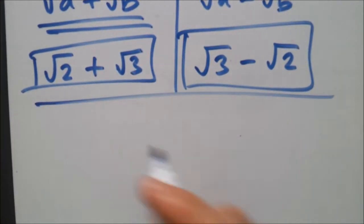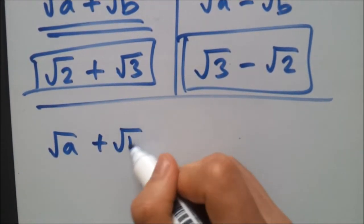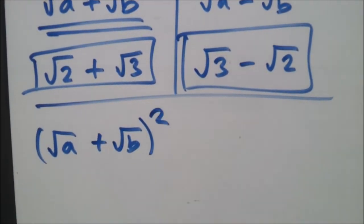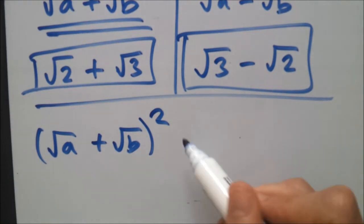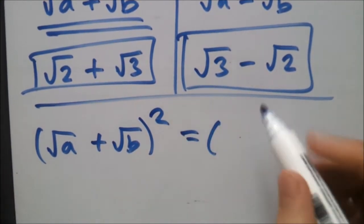Okay, so now this is the main part I was interested in. Suppose we had root a plus root b all squared. In this case we need to be familiar with quadratics. When it's squared, it's like having two lots of these: root a plus root b times root a plus root b.